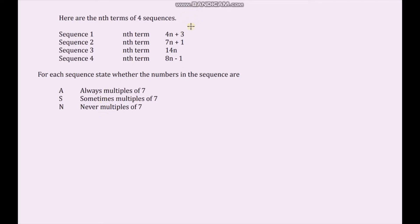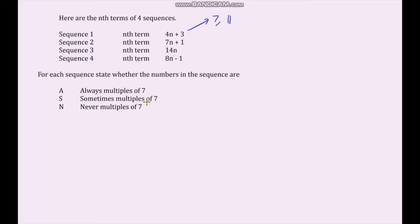The first term is 4 times 1 plus 3, which is 7 — a multiple of 7. The second term is 4 times 2 plus 3: that's 8 plus 3 equals 11, which is not a multiple of 7. We don't need to go any further — we have a multiple of 7 for term 1 but not term 2, so sequence 1 is sometimes a multiple of 7.